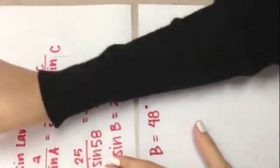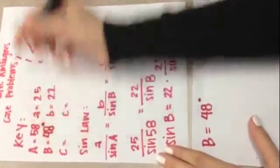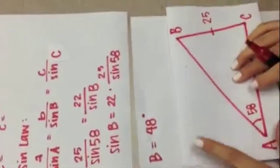We will go back to our key and plug in that B is equal to 48 degrees and back to our triangle and look at what we are missing.